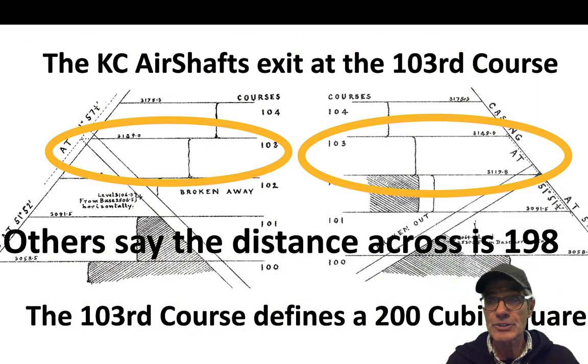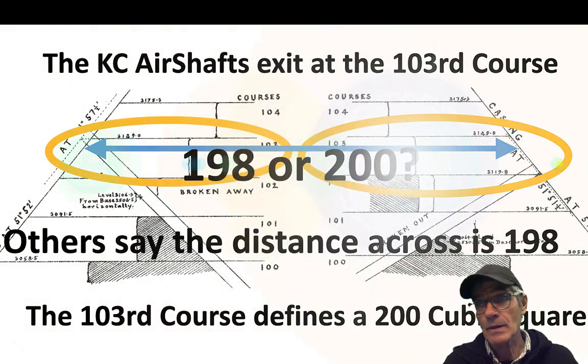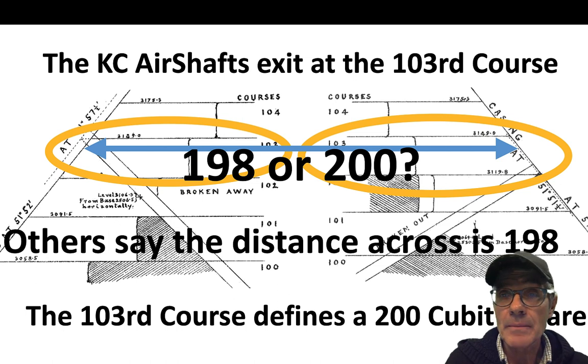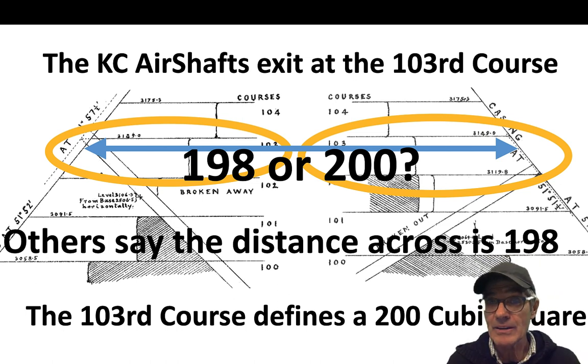Others say the distance across is 198. Is it 200 or 198? What I found in my own calculations is that when you calculate any height on the Great Pyramid, the chances of it being an even cubit across is small. But usually when you feel you've come to an even cubit, because the Egyptians used that - we don't use it today - but when one of our meters or feet measurements, when converted to cubits comes out even, that seems to indicate something, like you're chasing something the Egyptians were doing.